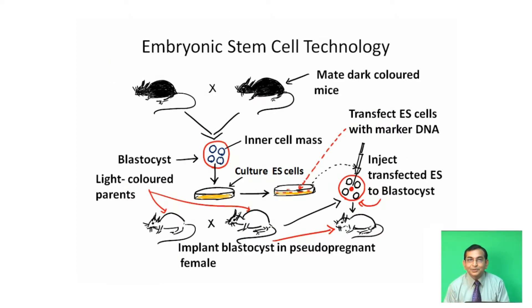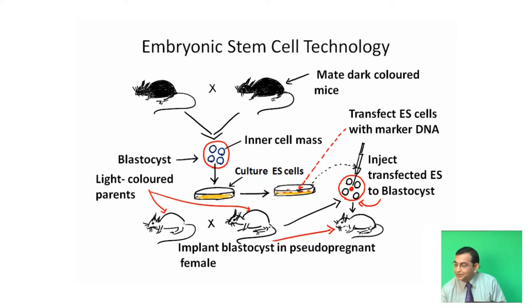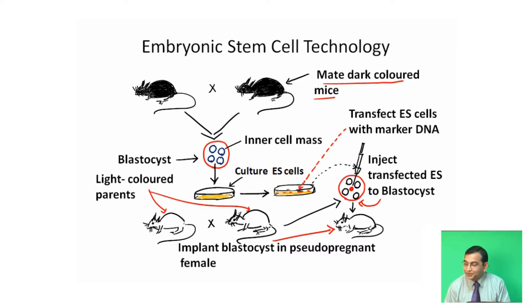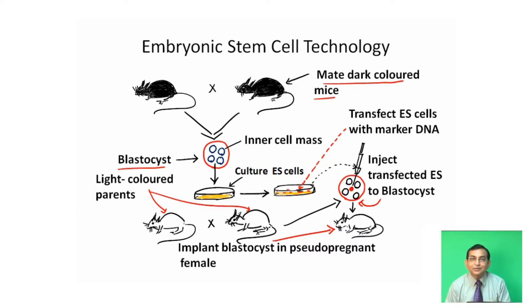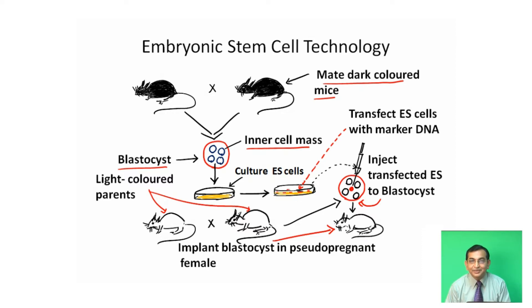We can also produce transgenic mice by embryonic stem cell technology. In this technique, dark-colored mice are mated. Then blastula or blastocysts are isolated from this dark-colored mouse. These blastocysts carry embryonic stem cells. The inner cell mass, which is present inside the blastula, carries stem cells which are totipotent in nature.